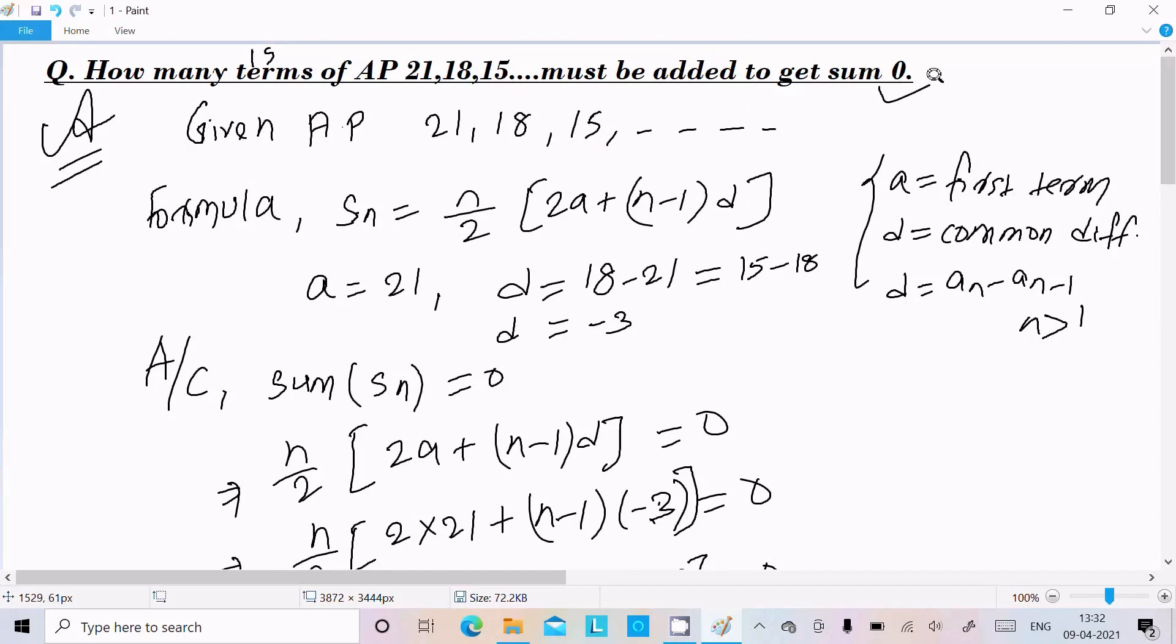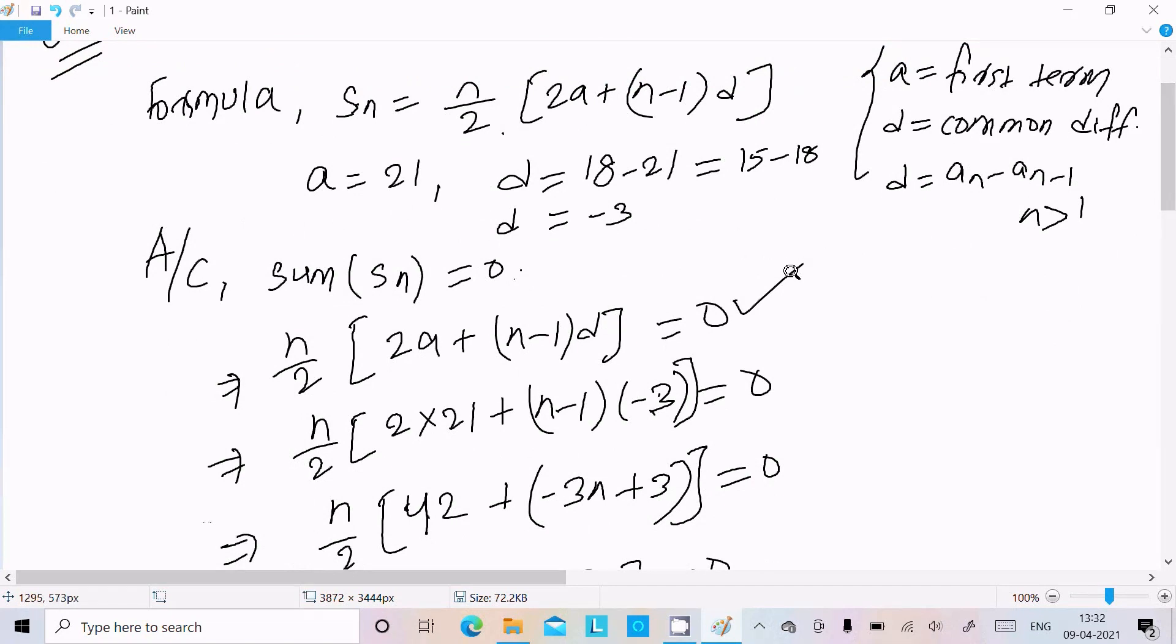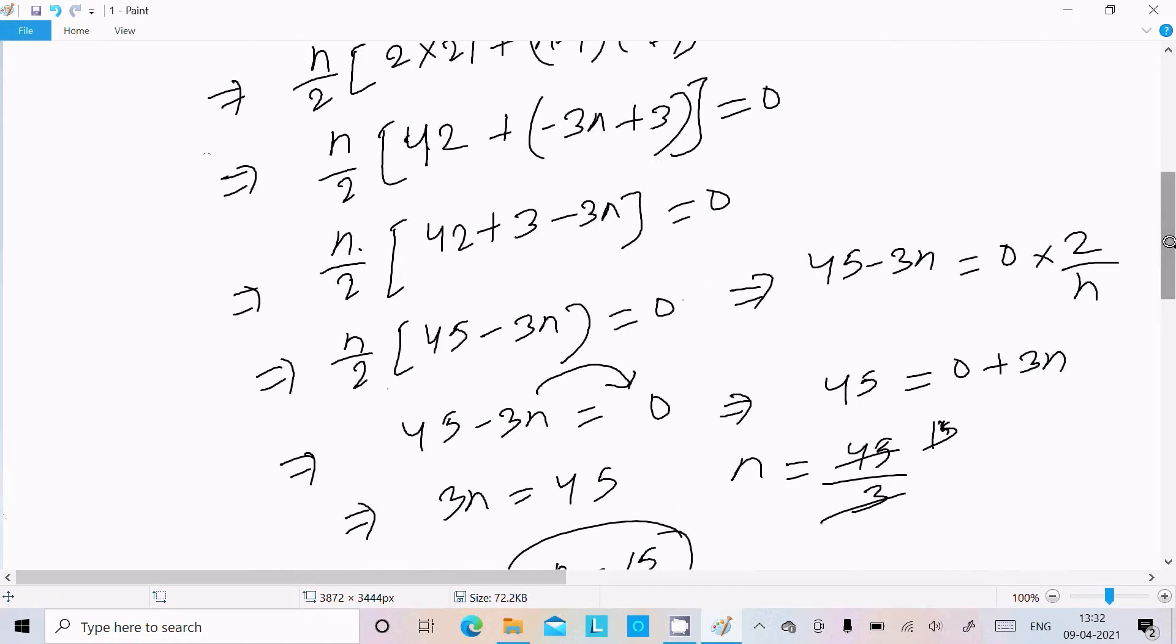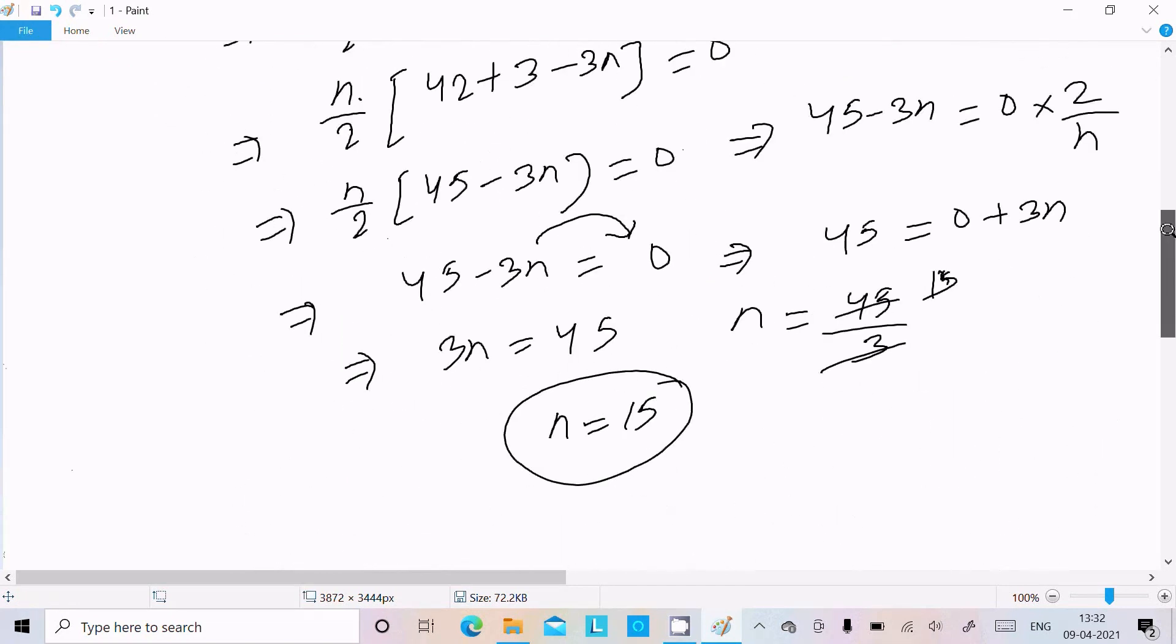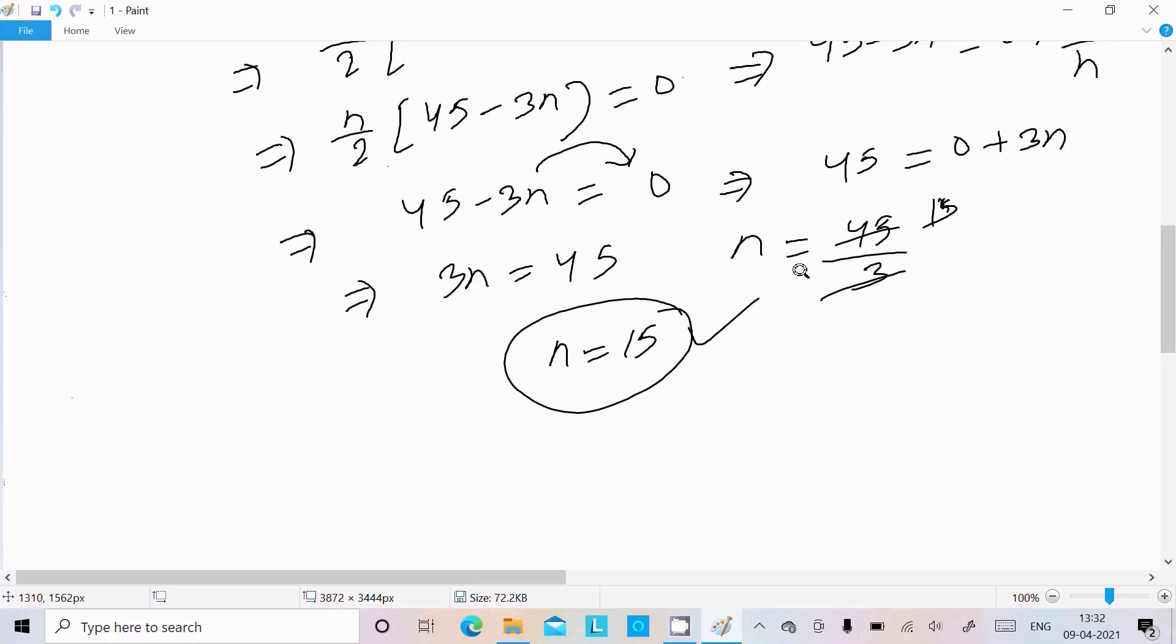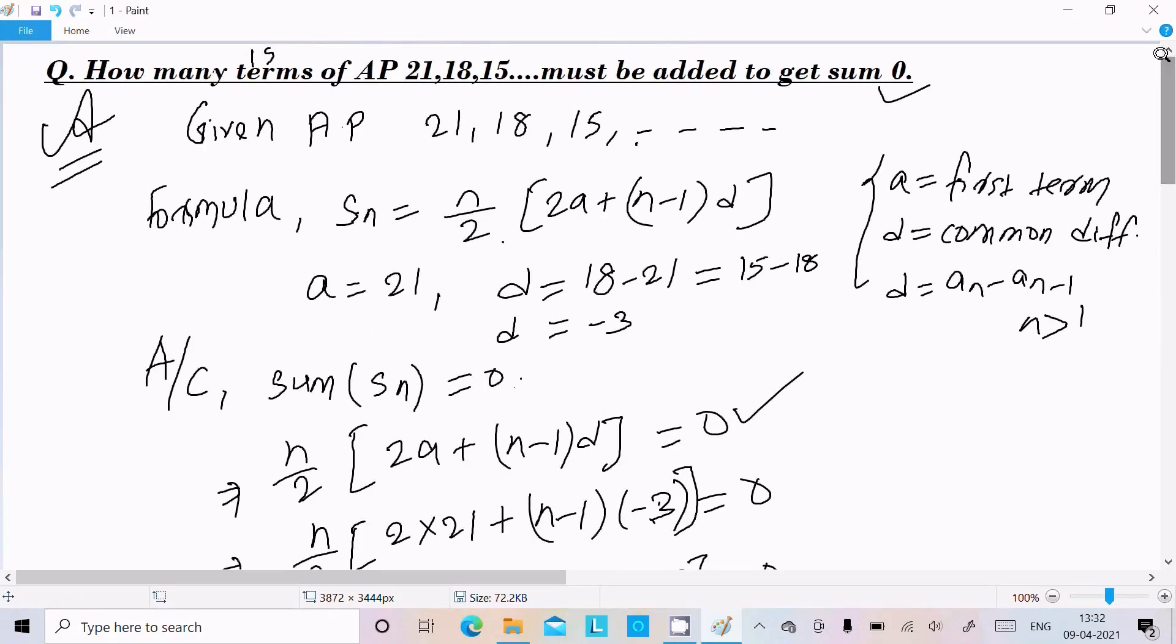So n value calculated. If you get sum equal to 120, sum equal to 150, so write here after that, use this formula, and here put a, d value and solve this. You need to calculate n. So n calculated, I got 15. So this is the correct answer. So how many terms? 15 terms of an AP must be added to get sum 0.